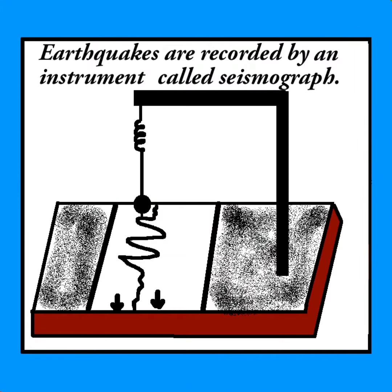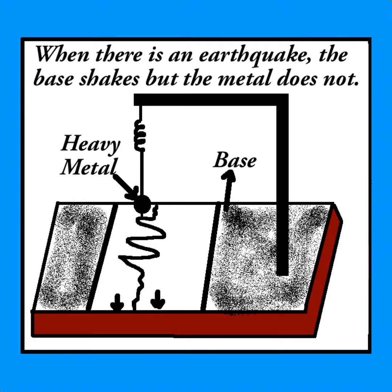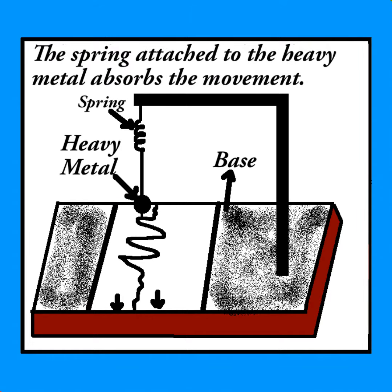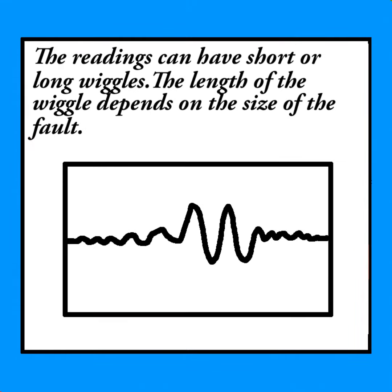Earthquakes are recorded by an instrument called a seismograph. The instrument has a base and a heavy metal. When there is an earthquake, the base shakes but the metal does not. The spring attached to the heavy metal absorbs the movement. The readings are recorded and can have short or long wiggles.